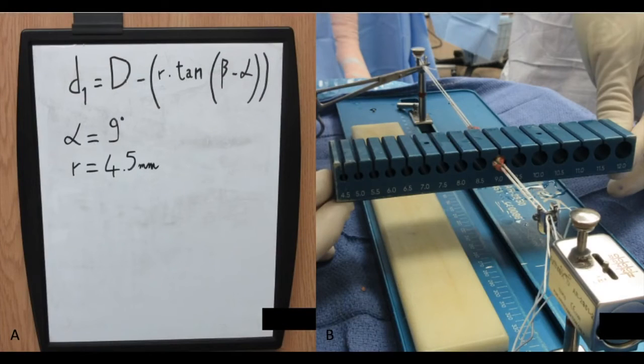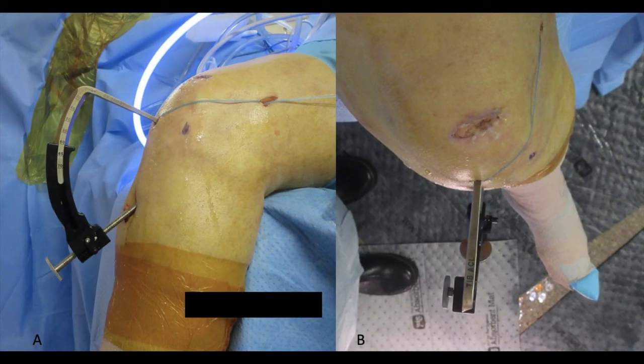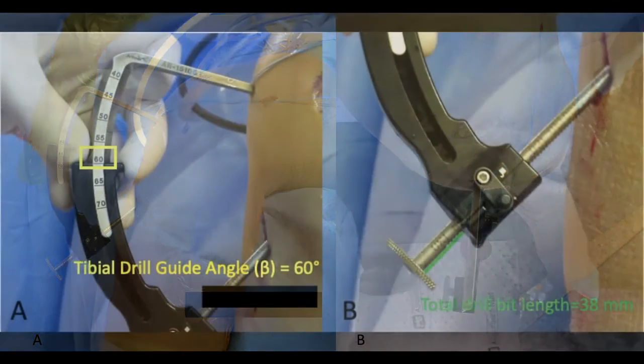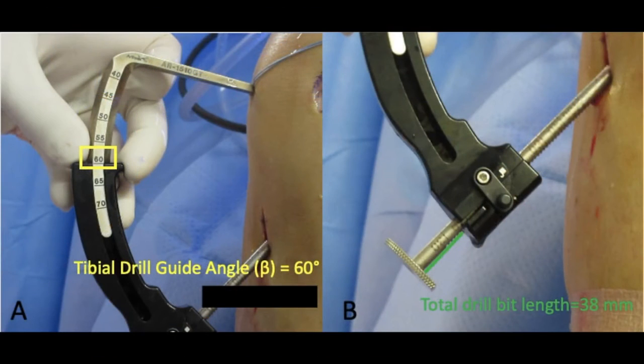We then harvest a soft tissue quadriceps tendon graft, which sizes to 9 millimeters, yielding a radius for our tibial tunnel of 4.5 millimeters. We now position our tibial drill guide parallel with the tibial plateau in the sagittal plane, and perpendicular with the anterior medial cortex of the tibia in the axial plane. We now record our tibial drill guide angle and our drill bit length off of the tibial drill guide.